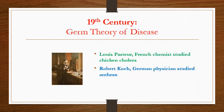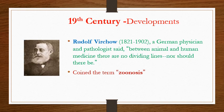In the 19th century, the germ theory of disease came for the first time. Louis Pasteur, a French chemist, studied chicken cholera — Pasteurella multocida — and Robert Koch, a German physician, studied anthrax. Together they first discovered that diseases are due to germs. Also in the 19th century, Rudolf Virchow, a German physician and pathologist, said: between animal and human medicine there are no dividing lines, nor should there be. He coined the term zoonosis for disease transmission between animals and humans, and is considered the father of modern pathology.